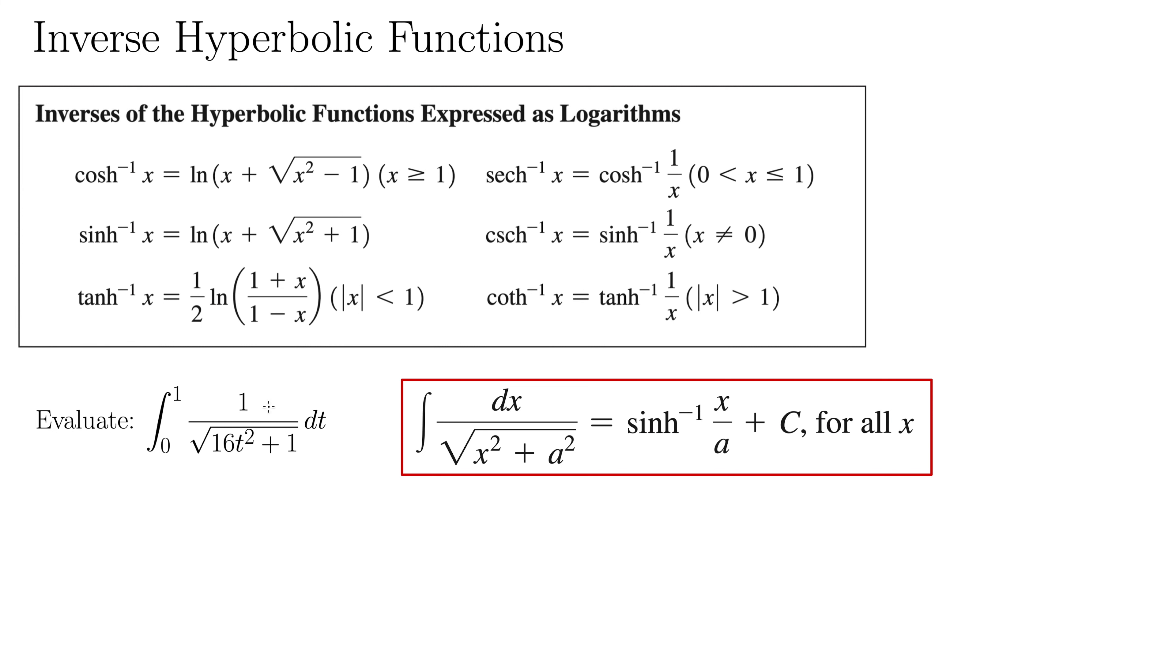So we'll need to do a little bit of u substitution here. How about if we let u be 4t? Because then 4t squared gives us 16t. Because why would we do that? Well, this formula only works on x squared. There's no constant in front of it.